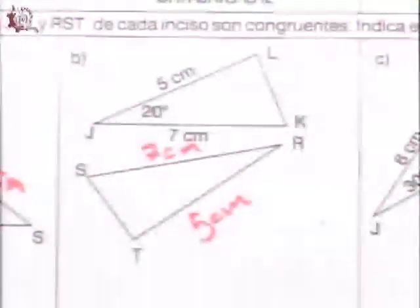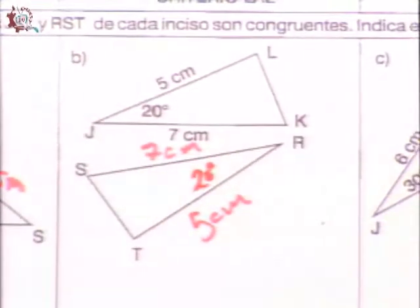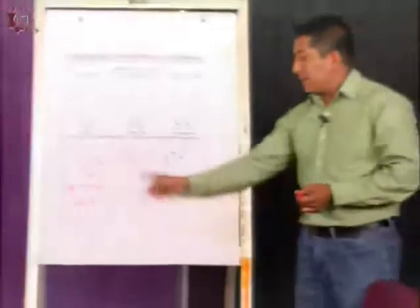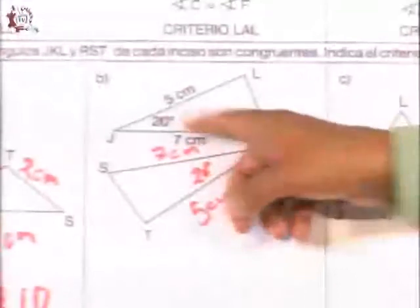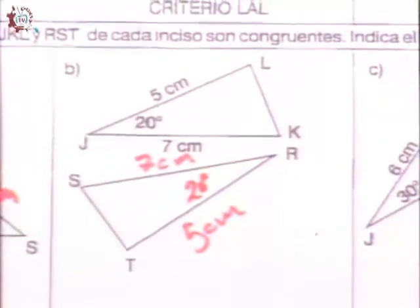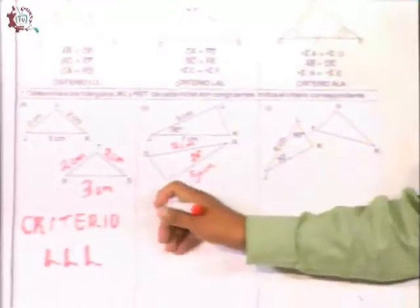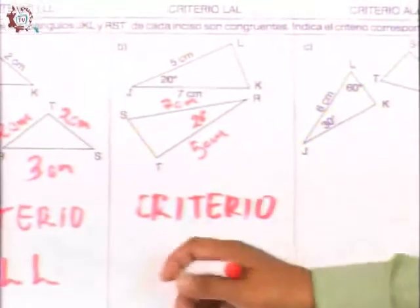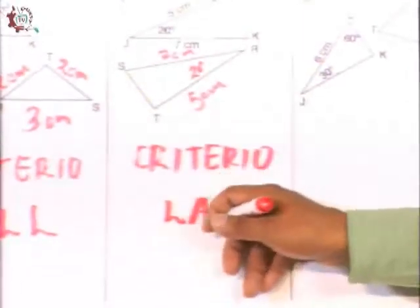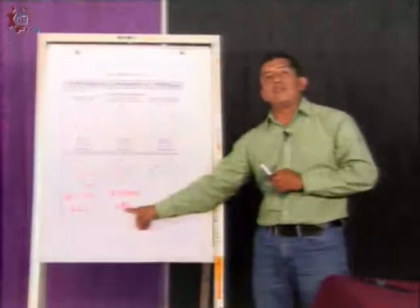Con nuestro transportador, vamos a tomar la medida para verificar que exactamente tiene los grados indicados. El ángulo mide 20 grados. De esta manera, voy a comprobar si los lados homólogos miden lo mismo y el ángulo también, el cual se forma con estos dos lados. Si esto se cumple, entonces voy a determinar que estos triángulos son congruentes bajo el criterio de lado-ángulo-lado, porque dos de sus lados miden lo mismo y el ángulo que se forma entre ellos también.